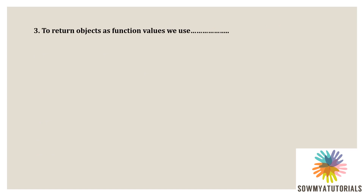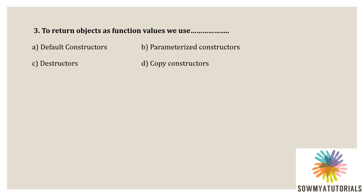Next question: to return objects as function values, we use — Options: A) default constructor, B) parameterized constructor, C) destructor, D) copy constructor. The copy constructor is a parameterized constructor using which one object can be copied to another object. Objects must be returned as functional values, so the correct option is option D, copy constructor.